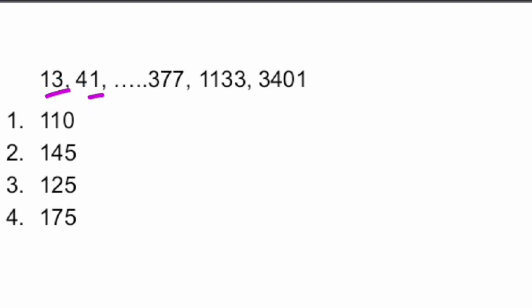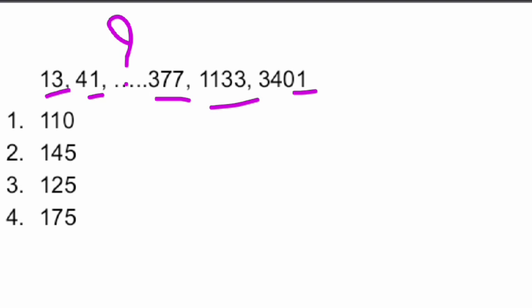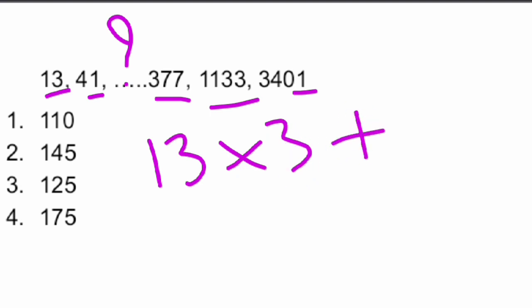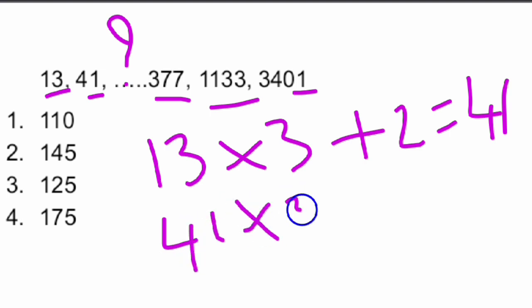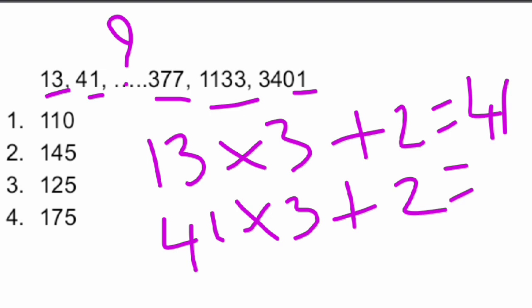The series given is: 13, 41, ___, 377, 1133, 3401. We need to find the missing number. First, 13 × 3 + 2 = 41. That is, 13 × 3 = 39, plus 2 = 41. Similarly, the next number will be 41 × 3 + 2, which is 123 + 2 = 125.